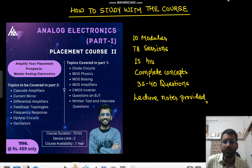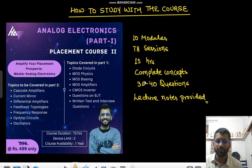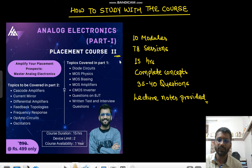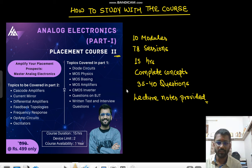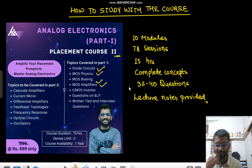Hello everyone. Today we will talk about the method you should follow while studying this course. Most of you must know that this is our second placement course — Analog Electronics Part One. The first placement course was on Basic Electrical Science. In this part we have covered diode circuits, MOSFET physics, MOSFET biasing, and MOSFET amplifiers.